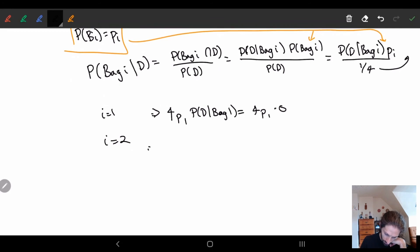So how about i equals two? What we get is four times P_2, P of D given bag two. And this one we also know, right? This one is one-half, it's two over four. So it's four times P_2 times two over four. So we get 2 P_2.